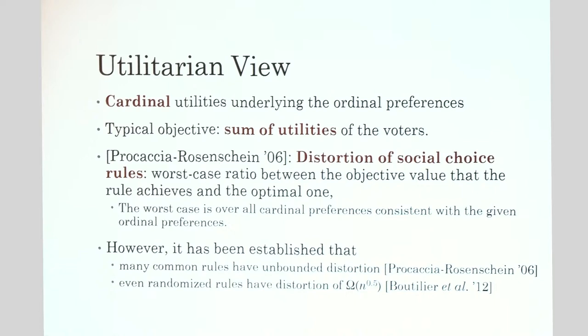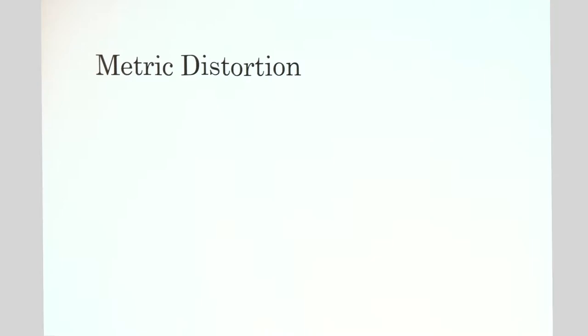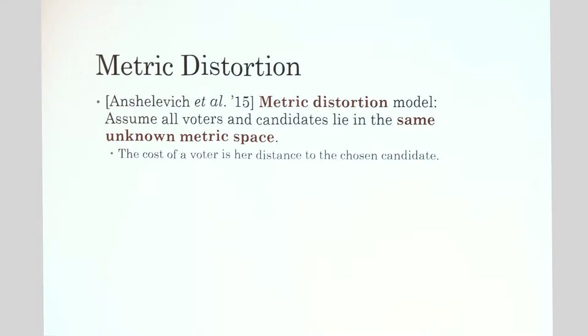The bad news is that for many common rules the distortion is unbounded, and for any social choice rule — even if it's randomized — it still has a distortion on the order of square root of n. To bypass these difficulties, in 2015 Anshelevich and others defined the metric distortion model.